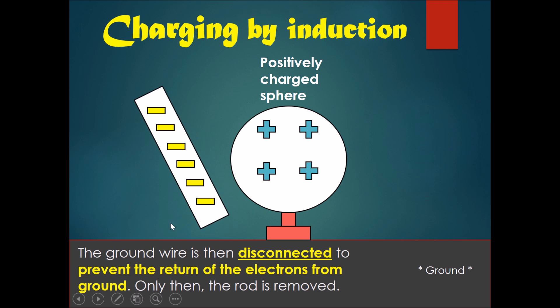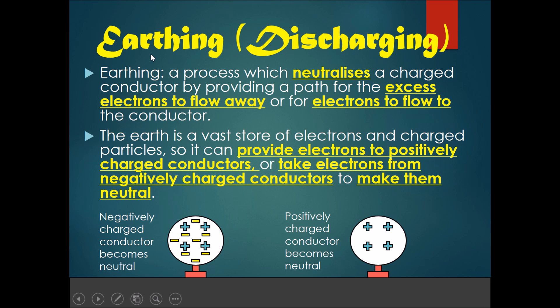Lastly, let's talk about earthing or discharging. Earthing is a process which neutralizes a charged conductor by providing a path for the excess electrons to flow away, or for electrons to flow into the conductor.